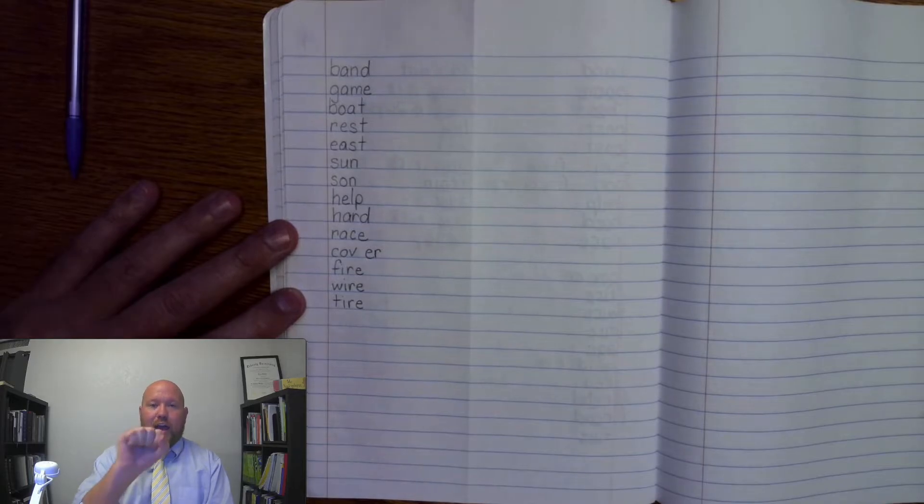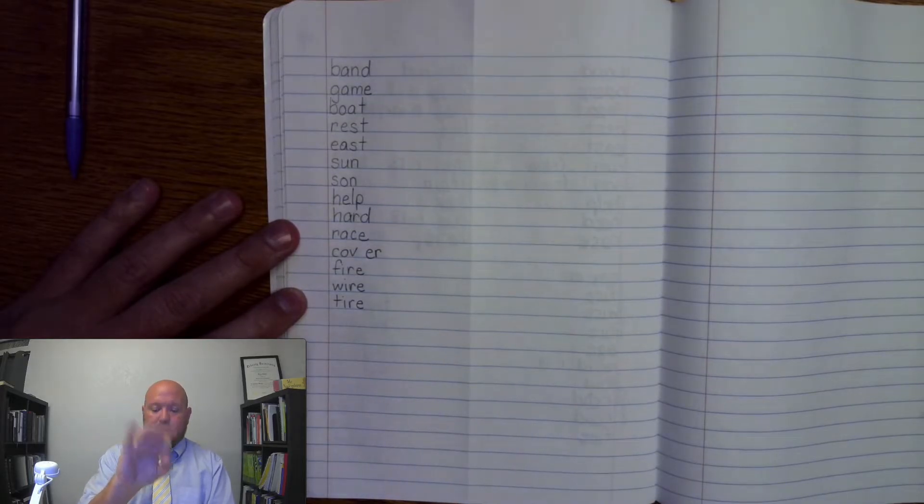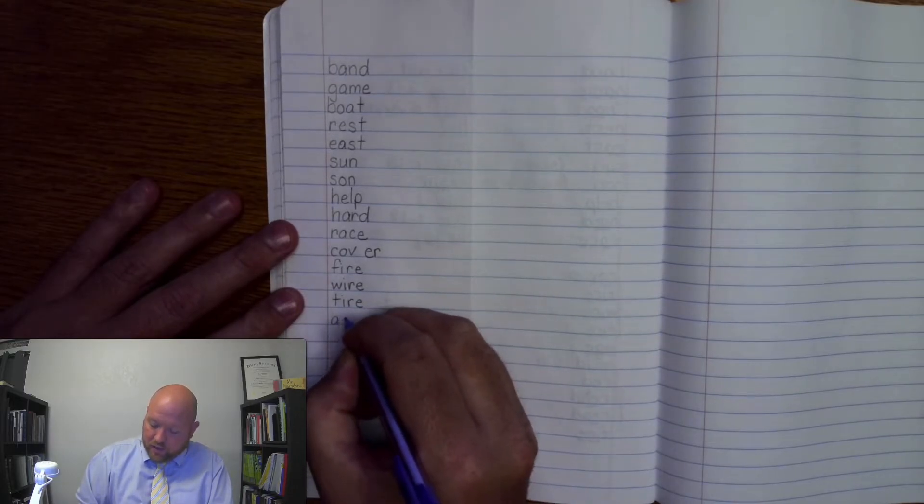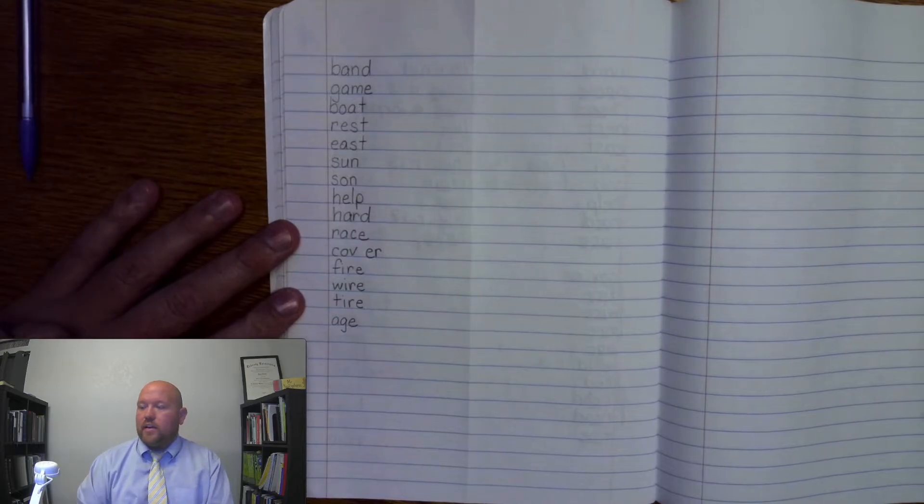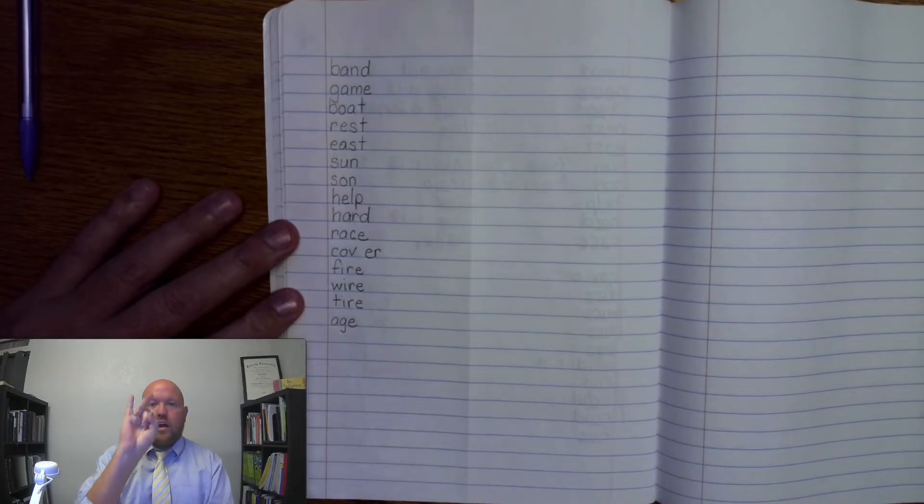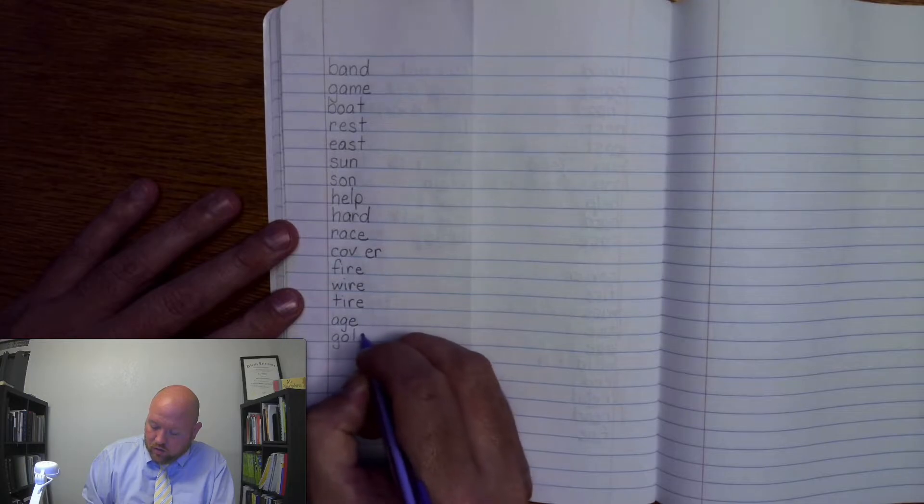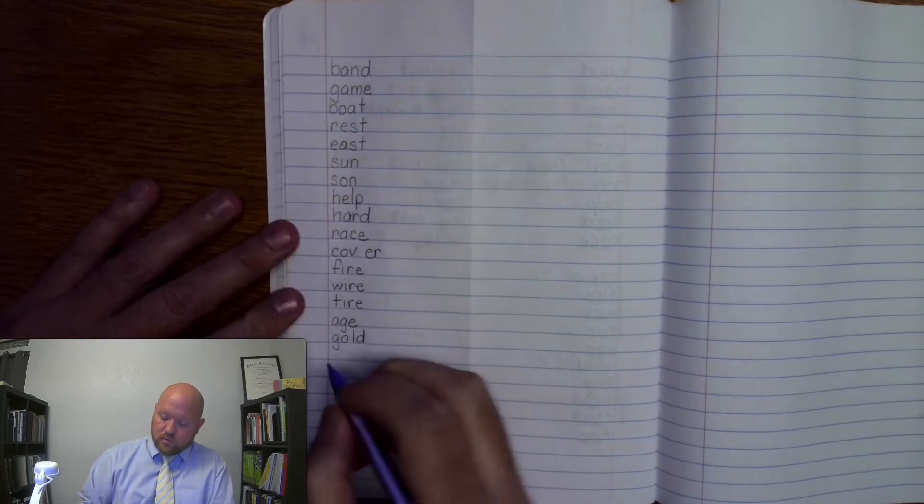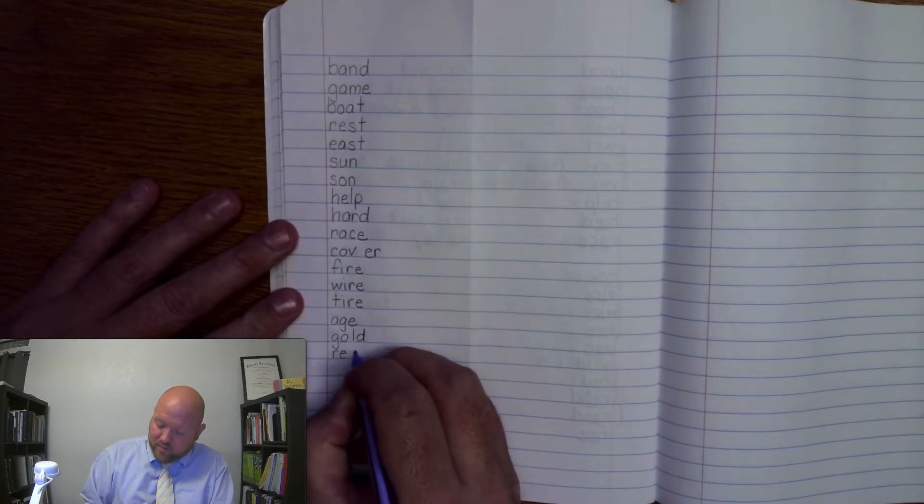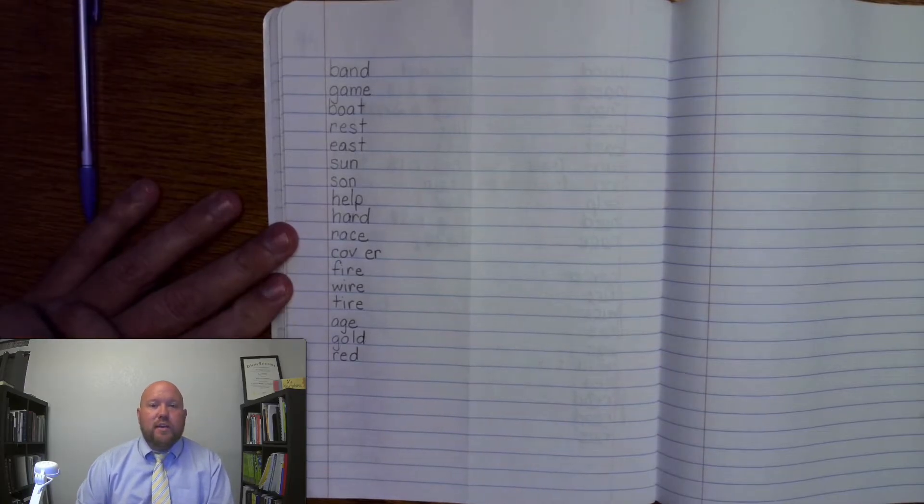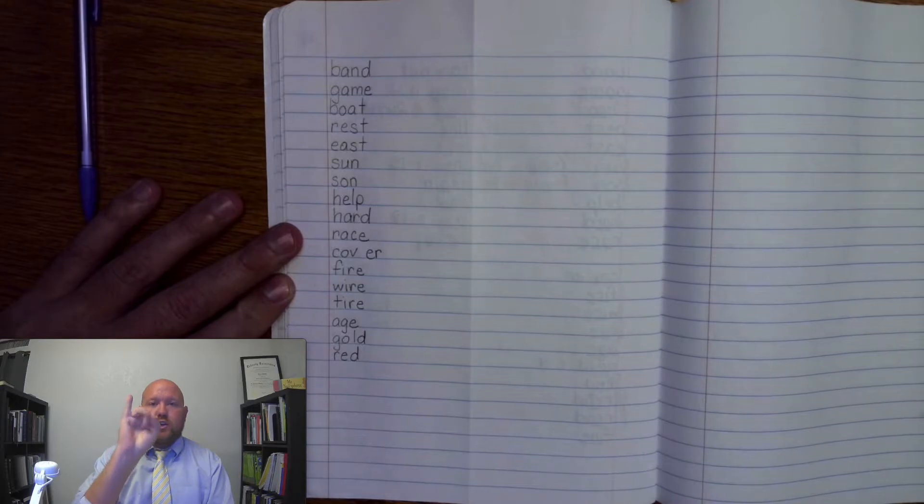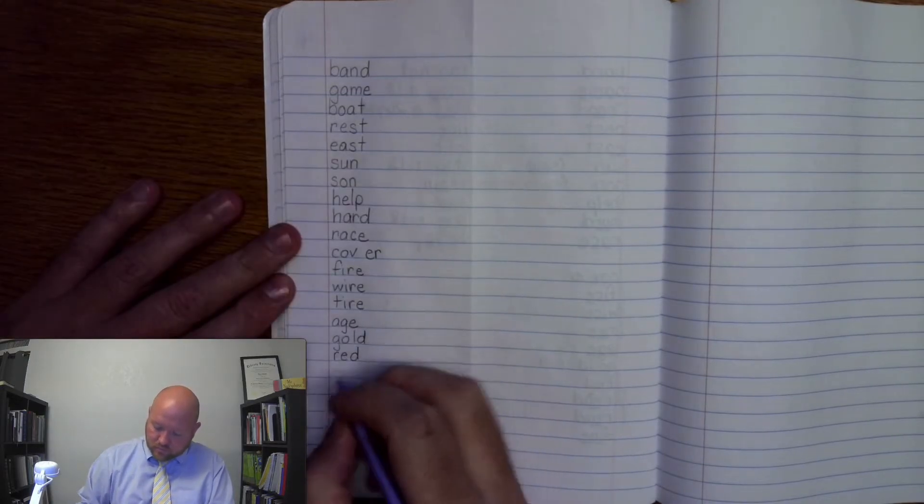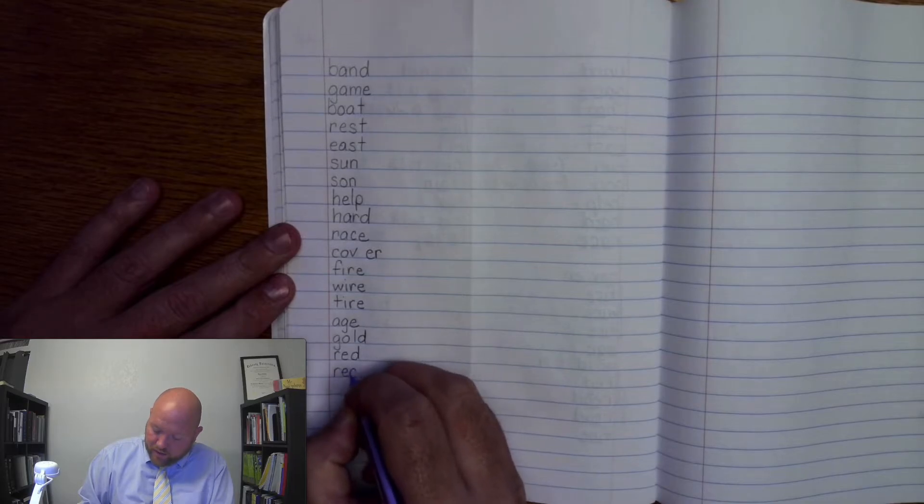The next word is age. A-G-E. Age. A-G-E. Age. Next word, gold. G-O-L-D. Gold. Next word is red, like the color red. R-E-D. Red. Write it. R-E-D. Red. The next word is read, like I read a book. R-E-A-D. Read. R-E-A-D. Read.